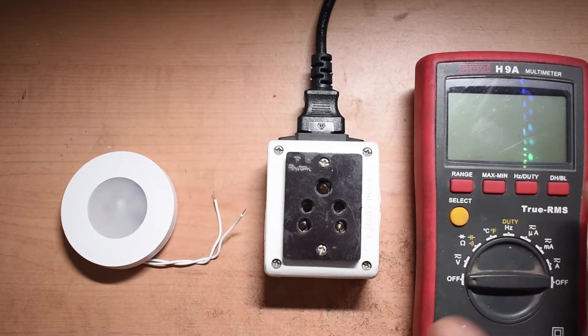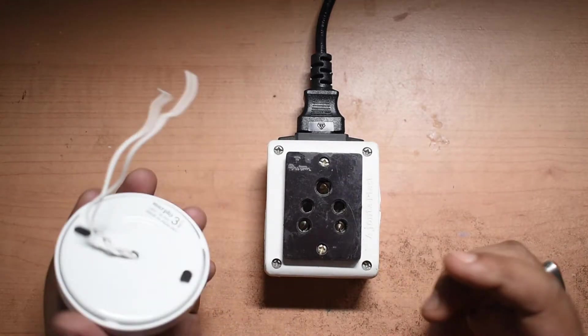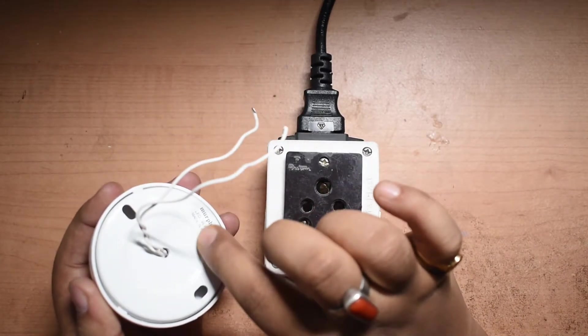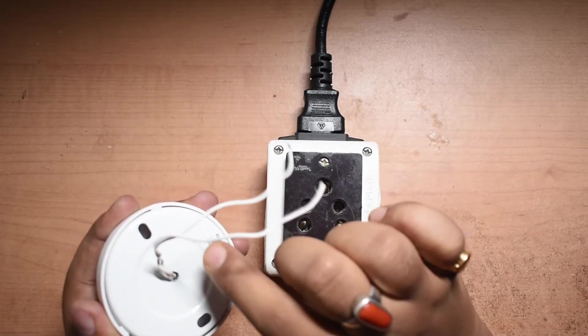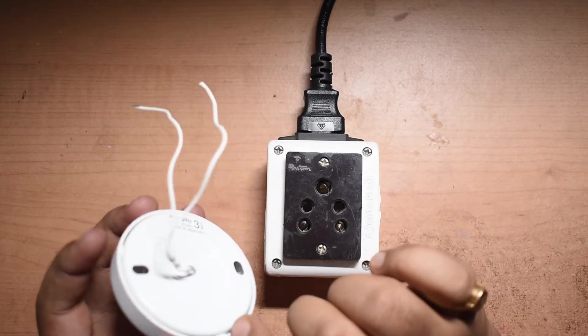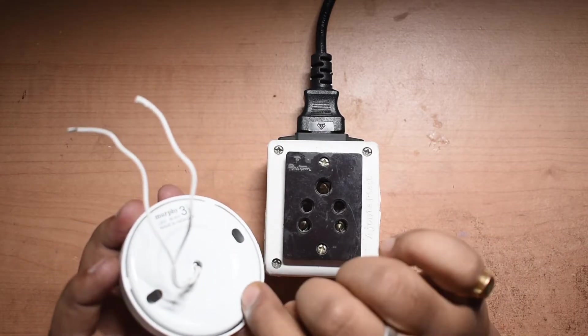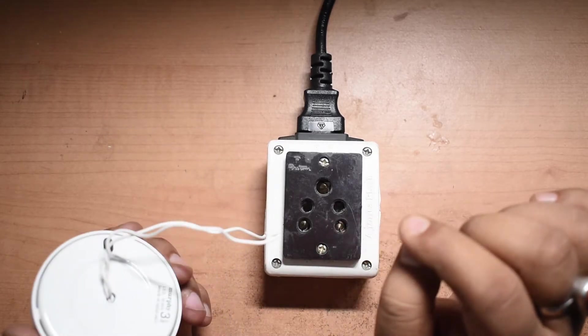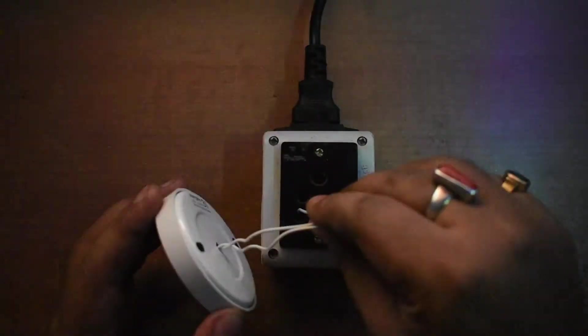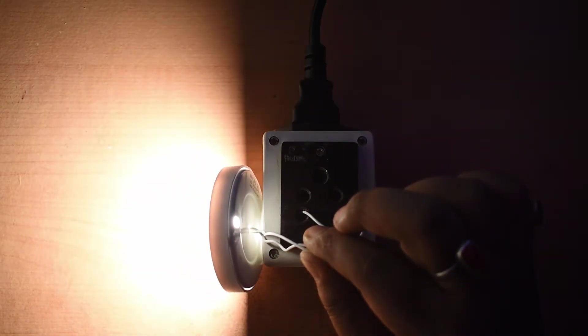Now one thing to notice here is the back of the LED is metallic and probably that is because of the heat dissipation. So while testing I need to take care of these metallic parts whether I'm not sure whether it's mains isolated or not. So as you can see the brightness of these LEDs is pretty good.